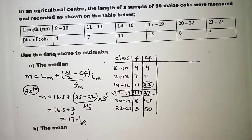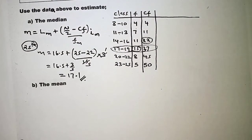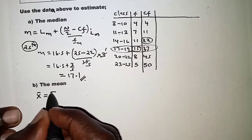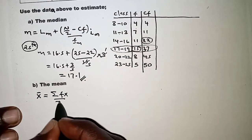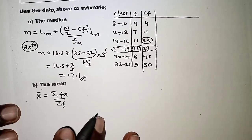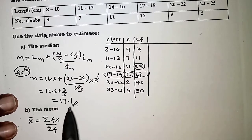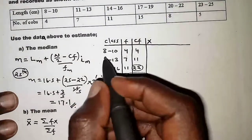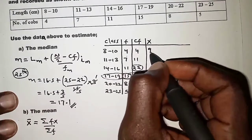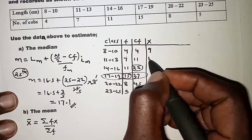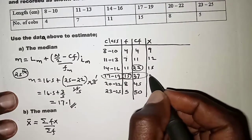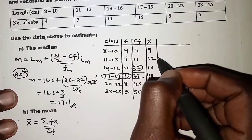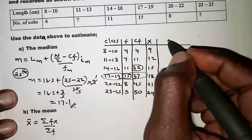Next we move to the mean. The mean is obtained using the formula: mean = Σfx / Σf. We still need a column for x, where x represents the midpoint of each class. For 8–10 the midpoint is 9; then 12, 15, 18, 21, and 24 for the remaining classes.